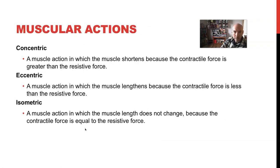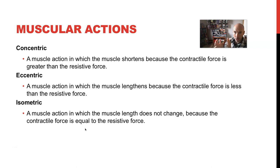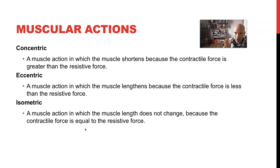The three muscular actions are: the concentric phase — the shortening phase; the eccentric phase — the lengthening phase; and the isometric phase — where there is no change in muscle length. Most movements involve concentric and eccentric phases, with potentially a brief isometric phase between transitions. These are terms we'll use frequently throughout the course.